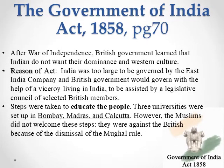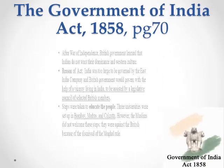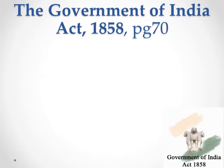After the War of Independence, the British government learned some serious lessons — that Indians did not want their dominance and Western culture, because Indians are much richer in their own tradition and culture, which is much older than Western culture. The East India Company felt their government was in danger and needed a representative living in India along with the assistance of a legislative council of selected British members, since sending a permission letter to London took about five days by sea. They also built three universities in Bombay, Madras, and Kolkata. However, Muslims did not welcome these steps because they were against the British due to the dismissal of the Mughal rule.